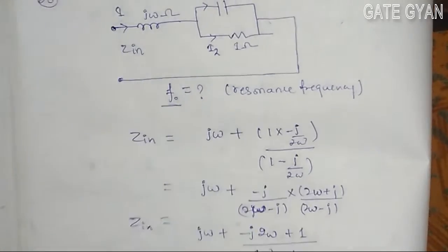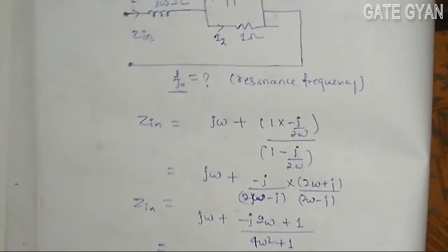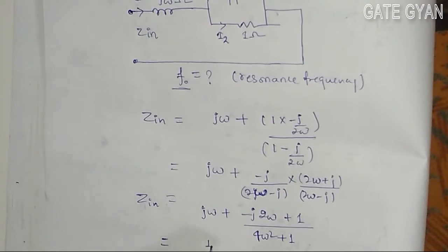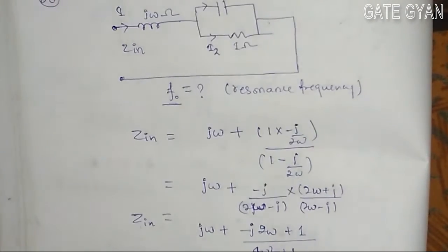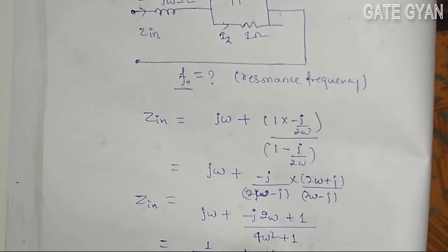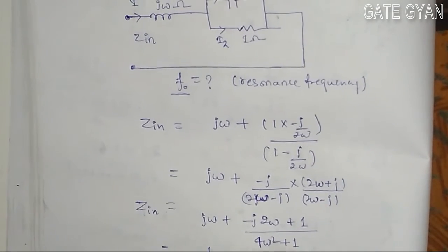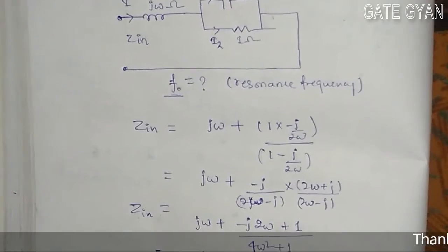So when I will break into real and imaginary parts, my real part is going to be 1 upon 4 omega square plus 1, plus j omega minus 2j omega by 4 omega square plus 1.